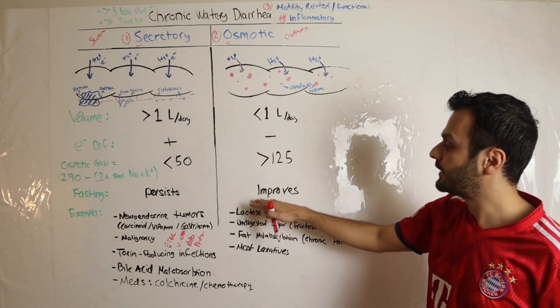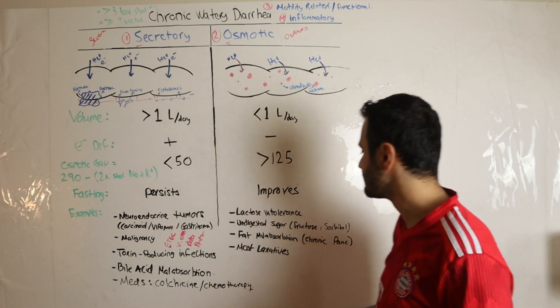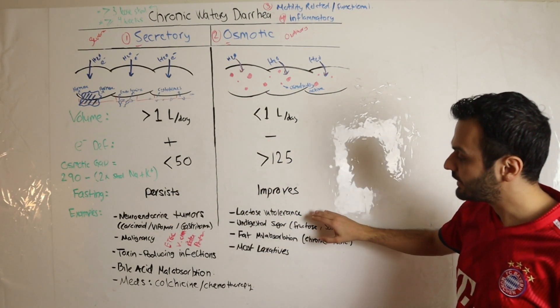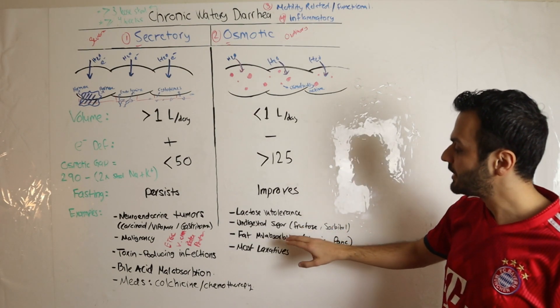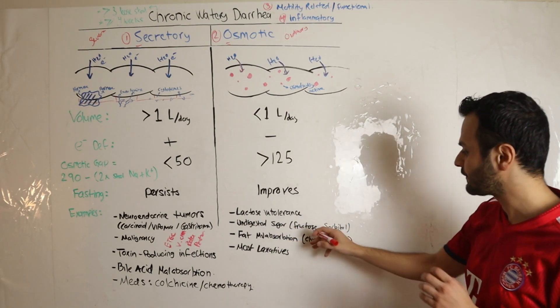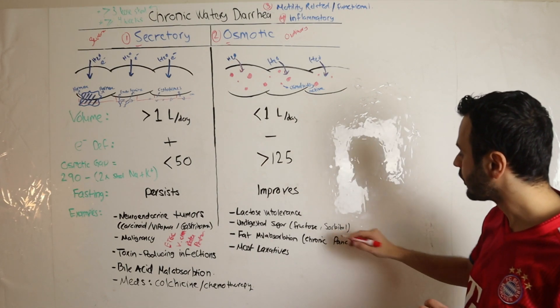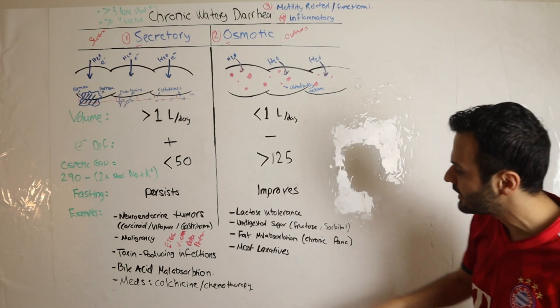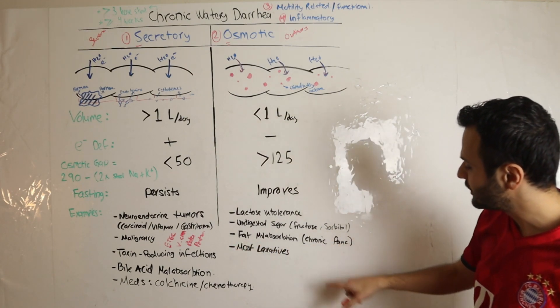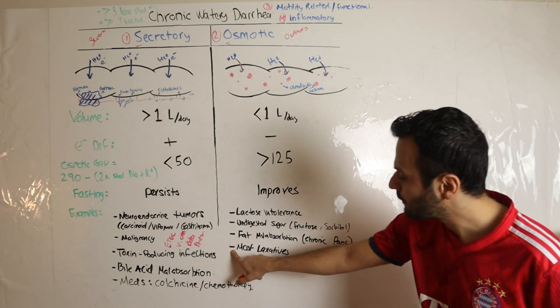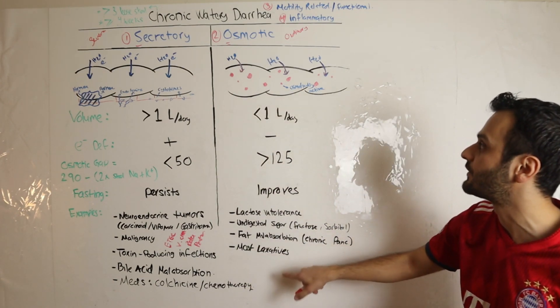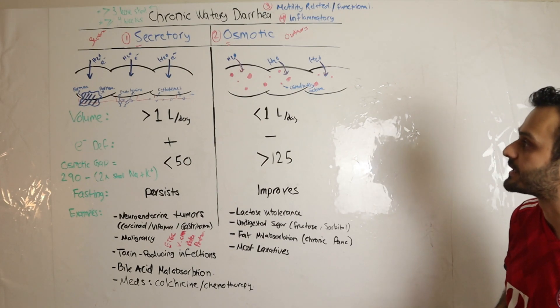That's a major difference between the two. Examples of osmotic diarrhea include lactose intolerance, patients with undigested sugars such as fructose intolerance, sorbitol which you commonly find in sweeteners, patients with fat malabsorption such as chronic pancreatitis, or patients who commonly or heavily take laxatives.